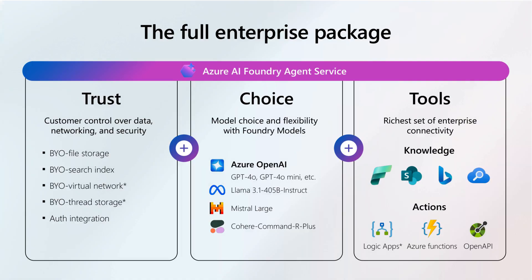Enterprise-grade features include private memory and thread storage that ensure data security and compliance within your environment, whether on-premises or cloud. Authentication protocols enable secure token passing for seamless API access, integrating with services like SharePoint, Bing for web grounding, and Azure AI Search. This design maintains strict adherence to corporate policies while supporting powerful AI functionalities, as highlighted in the session demos.